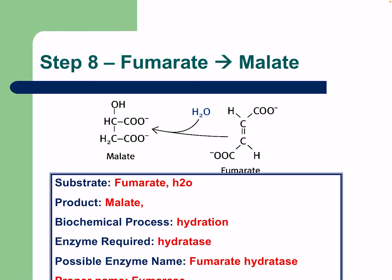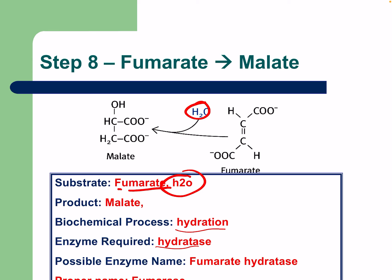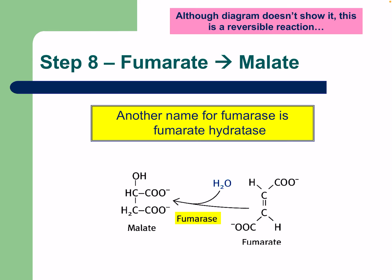Step eight: fumarate to malate. Water is added in a hydration reaction, requiring a hydratase enzyme. The enzyme is fumarase (also called fumarate hydratase). Water enters the reaction to form malate.